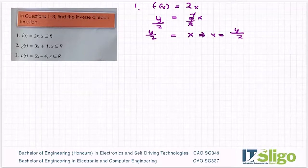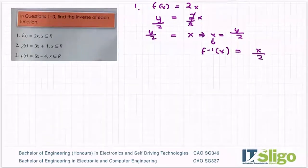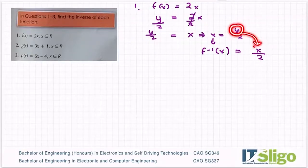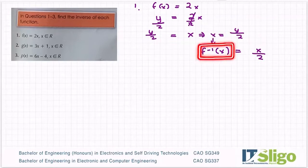And then what you do is, this becomes f inverse of x is equal to x over 2. So the third step is you replace the y with x. But at that stage you can't have, of course, x is equal to x over 2, so you write it as your inverse function. So f inverse of x then is equal to x over 2.